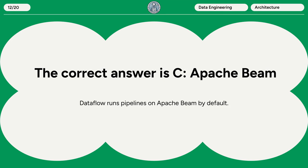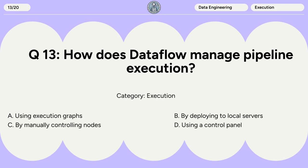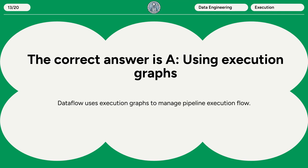Question 13: How does Dataflow manage pipeline execution? A. Using execution graphs. B. By deploying to local servers. C. By manually controlling nodes. D. Using a control panel. The correct answer is A. Using execution graphs. Dataflow uses execution graphs to manage pipeline execution flow.